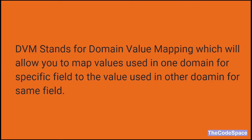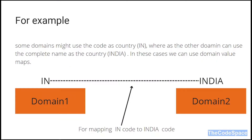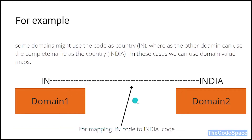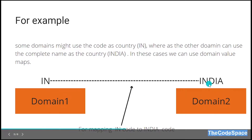DVM stands for Domain Value Mapping, which allows us to map values used in one domain with specific fields to another domain. For example, some domains use country code while another domain uses country name. That's where DVM comes into the picture — it converts domain-specific values to another domain-specific value. So here, domain 1 accepts 'IN' as a country code and another domain accepts 'India' as the country name. We will map that using DVM.